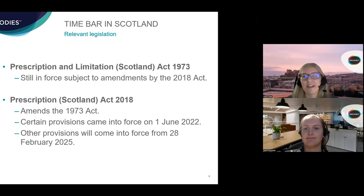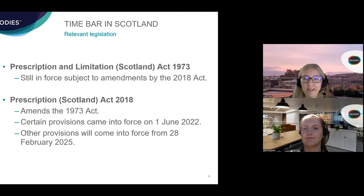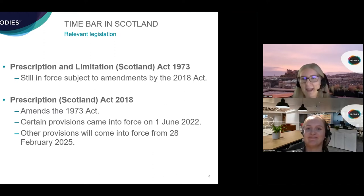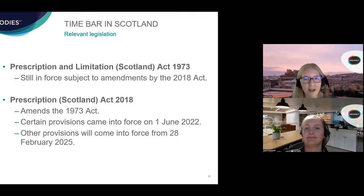The Scots law of prescription and limitation is governed principally by the Prescription and Limitation (Scotland) Act 1973. That Act is still in force, subject to important changes introduced by the Prescription (Scotland) Act 2018 which amended the 1973 Act. Certain of those changes came into force on the 1st of June this year — a very big day for litigation lawyers. But the majority of the changes under the 2018 Act will not enter into force until the 28th of February 2025.